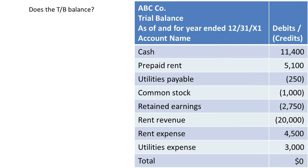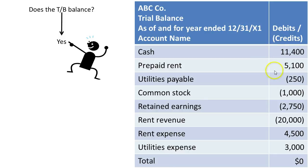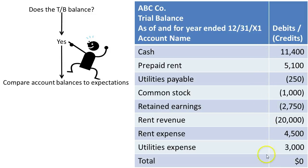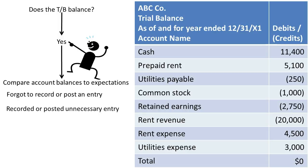Moving on to our final example. We've determined that our trial balance does balance, but that doesn't mean all the numbers are correct — they can be correct at the wrong debit and credit amounts. We can compare our account balances to our expectations and budgets. It's possible that we may have forgotten to record or post an entry, or recorded or posted an unnecessary entry.